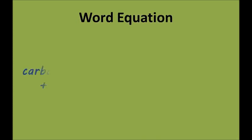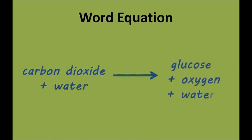We can write this process down in something called a word equation. We start by writing down the set of chemicals that we start with, which in this case is carbon dioxide and water. Then we draw an arrow and write down the chemicals that we end up with.